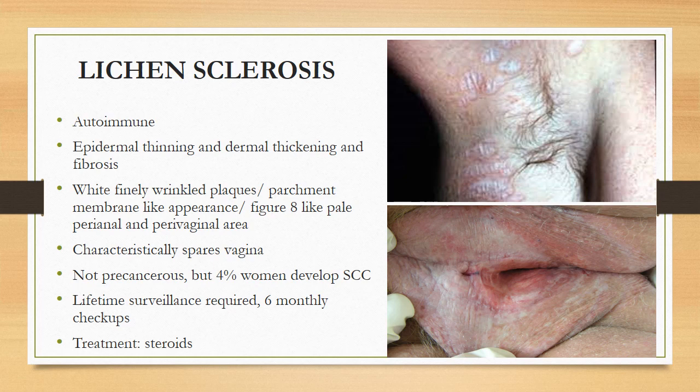We do six-monthly checkups because lichen planus is mostly a self-limiting disease, so in about six months those lesions will often go away on their own. But if it is lichen sclerosis, these are lifetime lesions that mostly persist. Again, the treatment for lichen sclerosis will be steroids.